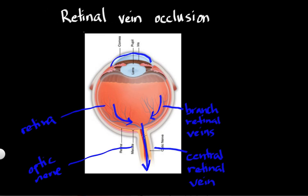Now let's suppose for a moment that a clot forms in this central retinal vein and all of the blood that's trying to drain out gets backed up — it's got nowhere to go. This is similar to the drainage in your bathtub: if that gets clogged, the water has nowhere to go and it spills out onto the bathroom floor. Well, what happens when a clot forms in the central retinal vein? The blood spills out all over the retina and you get bleeding — all this hemorrhage inside of the retina — because the blood had nowhere to go.